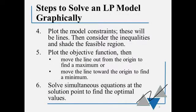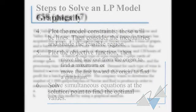Once we've set up the model, there are steps to solve it. We plot the model constraints as lines, consider our inequalities and shade the feasible region — the region where things could happen. Then we plot the objective function and move the line out from the origin to find a maximum, or move it closer to the origin to find a minimum. Finally, we solve simultaneous equations to find the solution point. We'll do an example so you can see what I'm talking about.